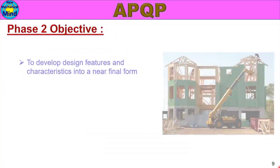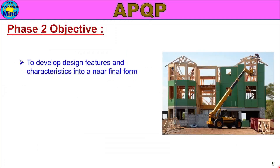Phase 2 objective: to develop design features and characteristics into a near-final form. The design character, parameter, and final form is the objective.